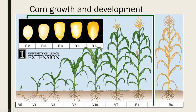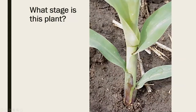So now we're going to check your knowledge. Take a look at this plant and think to yourself — what growth stage do you think this plant is? A lot of people think it's V3, but it's actually a V4. If you see here, this is the first leaf collar, second, third, and the fourth has just come out. So this is a V4 corn plant.